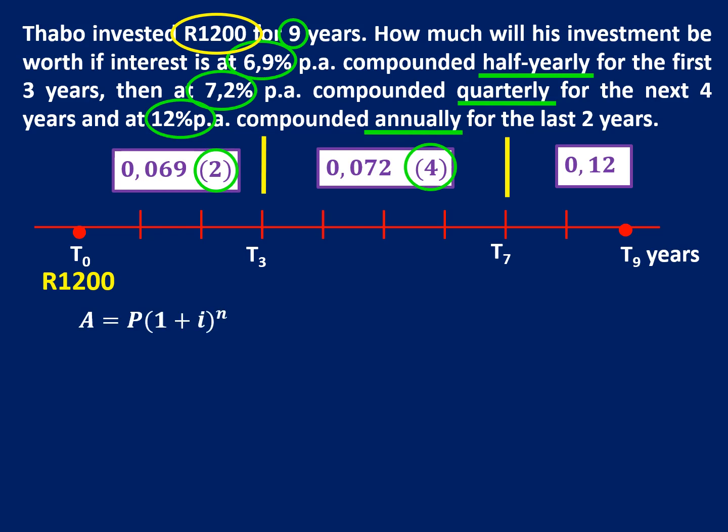Alright so it's compound interest and R1,200 is going into the account. The interest is being compounded half yearly so twice. So we're going to divide that interest by two and multiply the years by two. Now remember this is just going to be my P-value for the next part of the calculation.